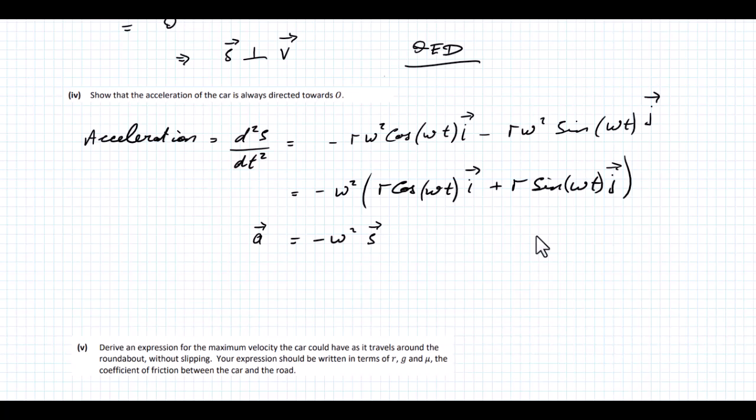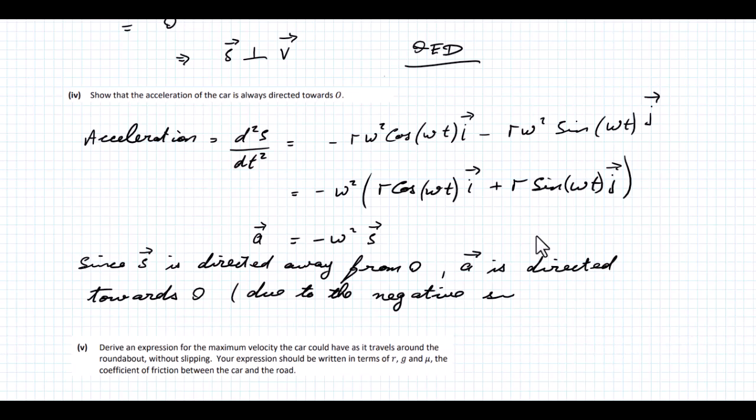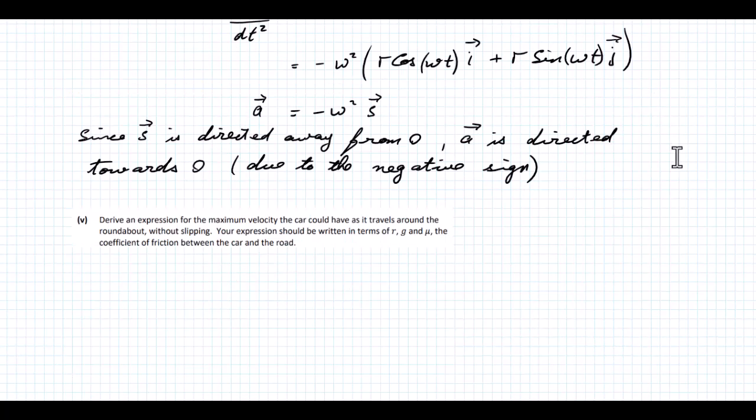This is our acceleration vector. Since the S vector is directed away from O, our acceleration vector is directed towards O. This is due to the negative sign.